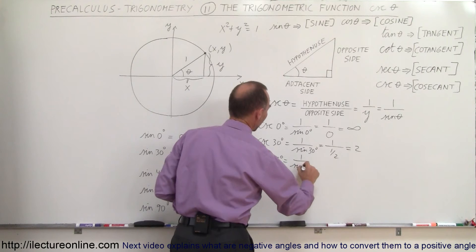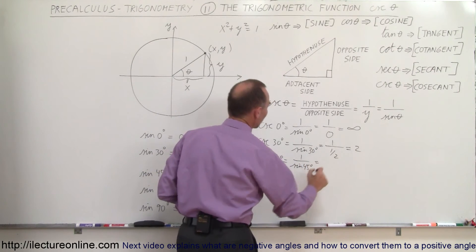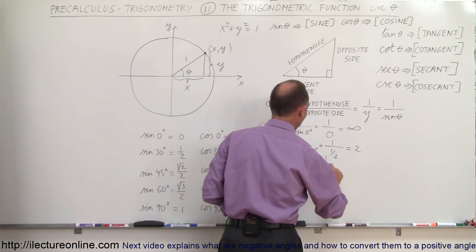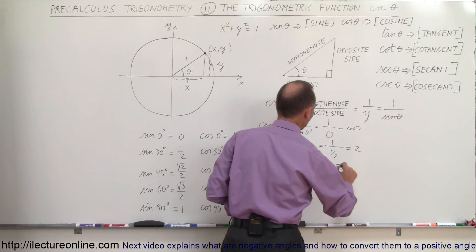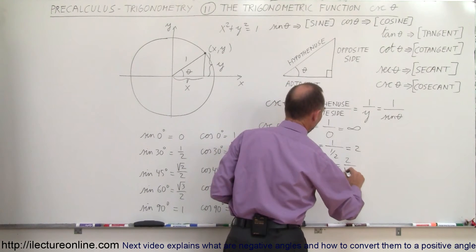The cosecant of forty-five degrees is equal to one over the sine of forty-five degrees, which is equal to one divided by the square root of two, which is equal to two divided by the square root of two.